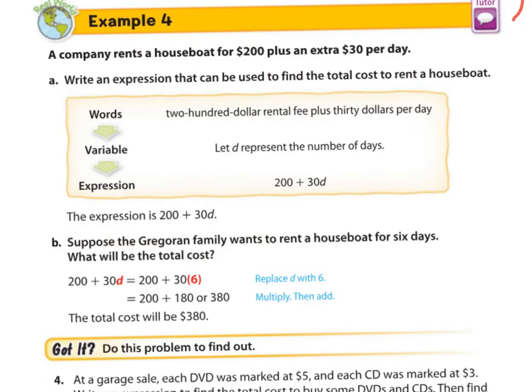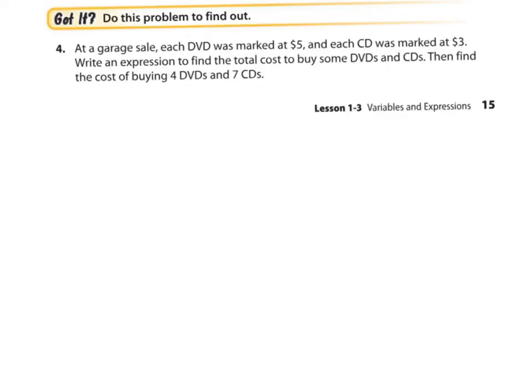And now let's bring it all together. Now we're going to use the written word and convert it into an expression with numbers. So a company rents a houseboat for $200 plus an extra $30 per day. So your initial fee is $200 plus $30 for each day. We don't know the number of days. So maybe we can do 30 times D because each day will be 30 plus the 200. So what does it look? We say $200 rental fee plus $30 per day. We let D represent the number of days. And an expression is 200 plus 30D. So you see that we have $30 per day plus the 200.